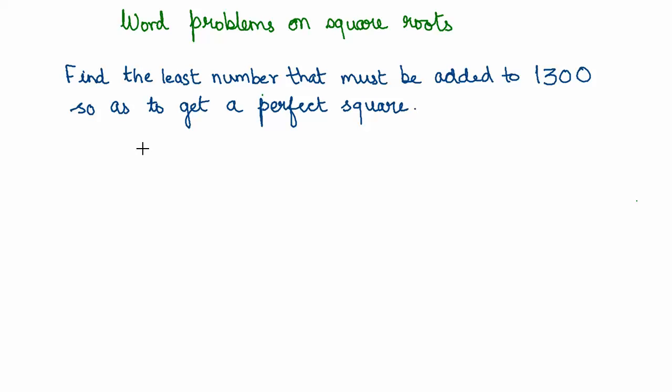Let us look at another interesting word problem which says find the least number that must be added to 1300 so as to get a perfect square. We should also find out the square root of that number.